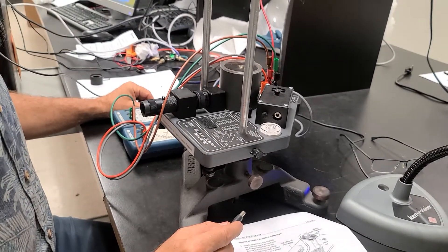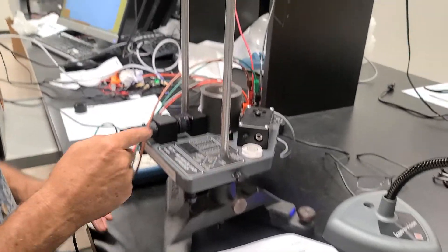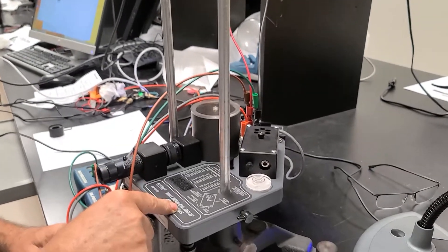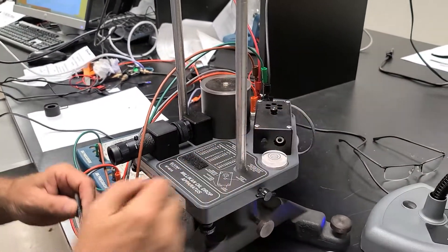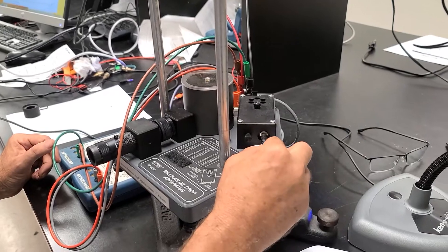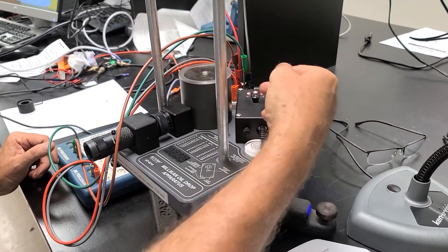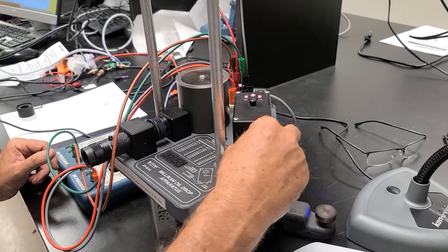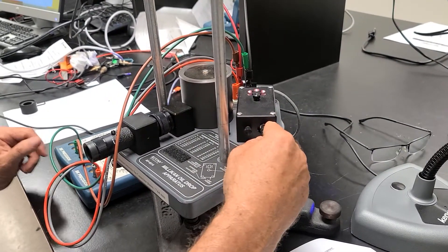This is the Millikan oil drop apparatus. I'll just start to explain the things here. This is going to be the light source that's going to shoot the light in between the chamber. It's a halogen light. I'm going to turn it off for now so we don't make it too hot.